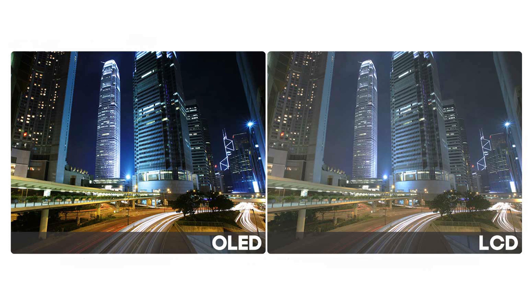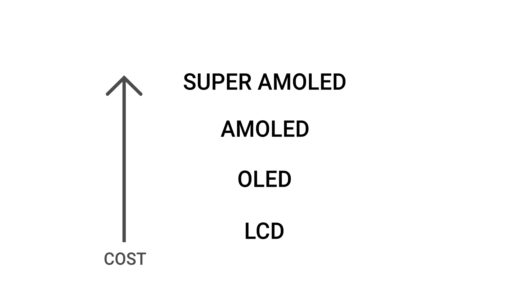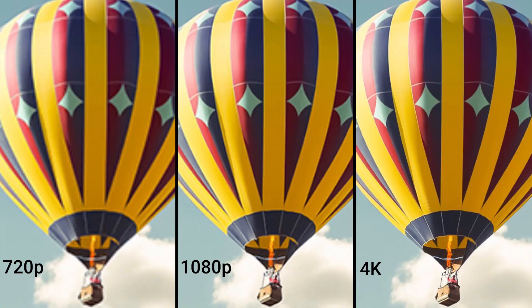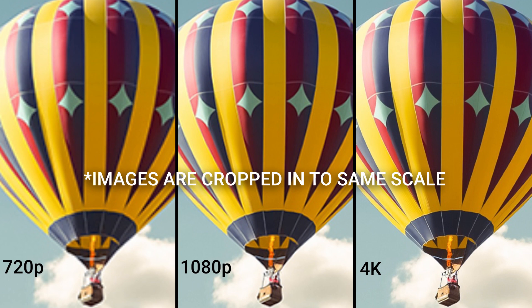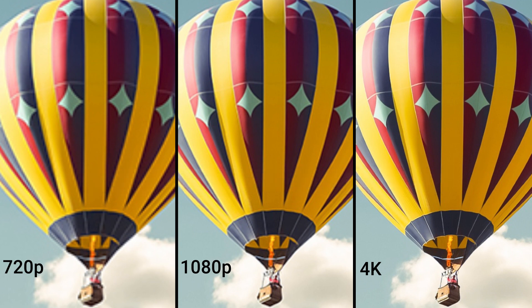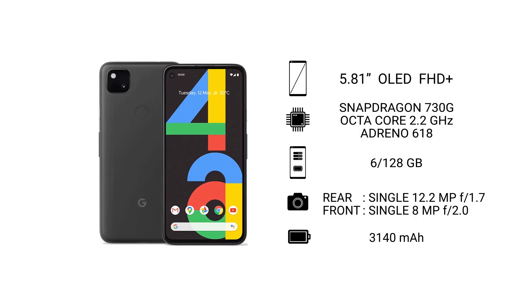In terms of brightness, contrast, and color, when it comes to smartphone displays, Super AMOLED displays are considered the best, followed by AMOLED displays, OLED, and then LCD displays. Along with image quality, the cost of each display technology also increases as we go up this list. The spec sheet also mentions the resolution, which simply determines the sharpness of the display — the higher the resolution, the sharper the image.